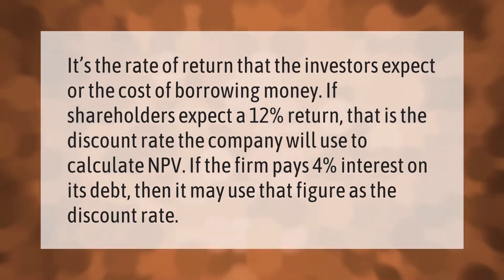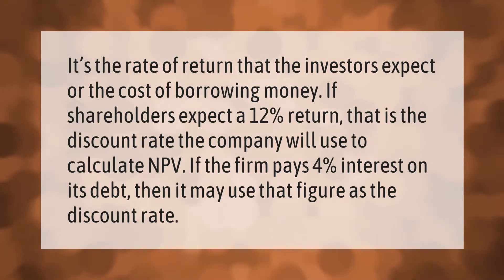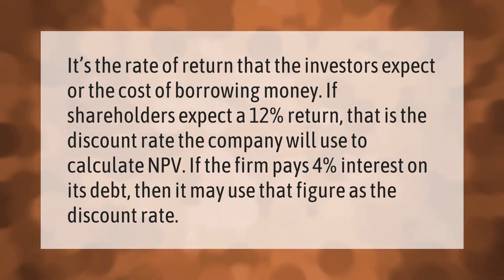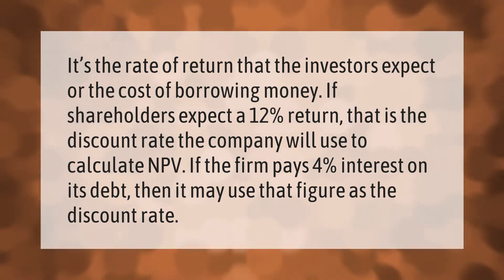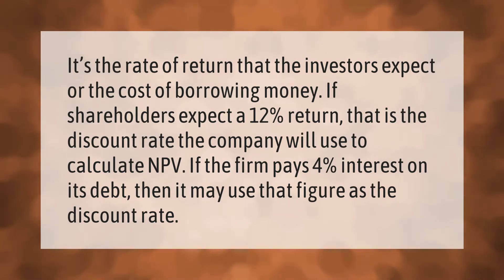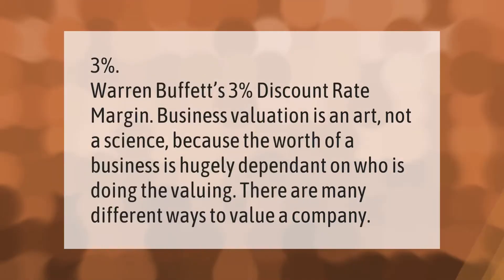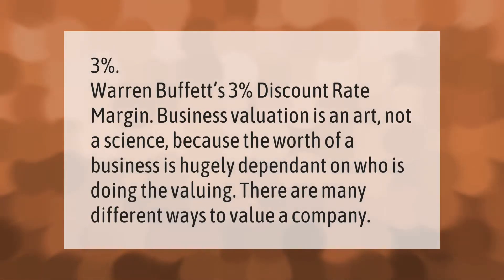It's the rate of return that the investors expect, or the cost of borrowing money. If shareholders expect a 12% return, that is the discount rate the company will use to calculate NPV. If the firm pays four percent interest on its debt, then it may use that figure as the discount rate. Warren Buffett uses a three percent discount rate.